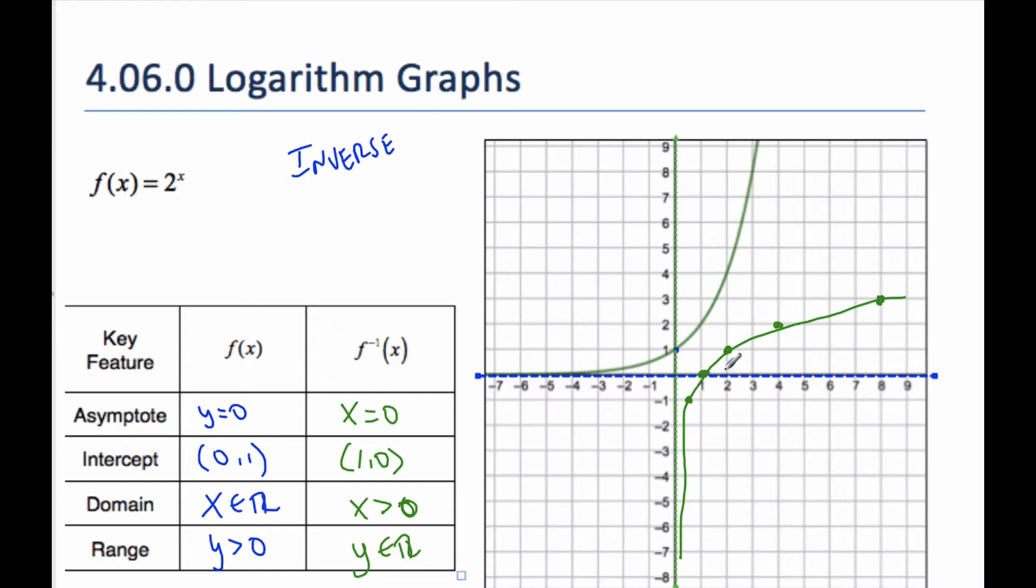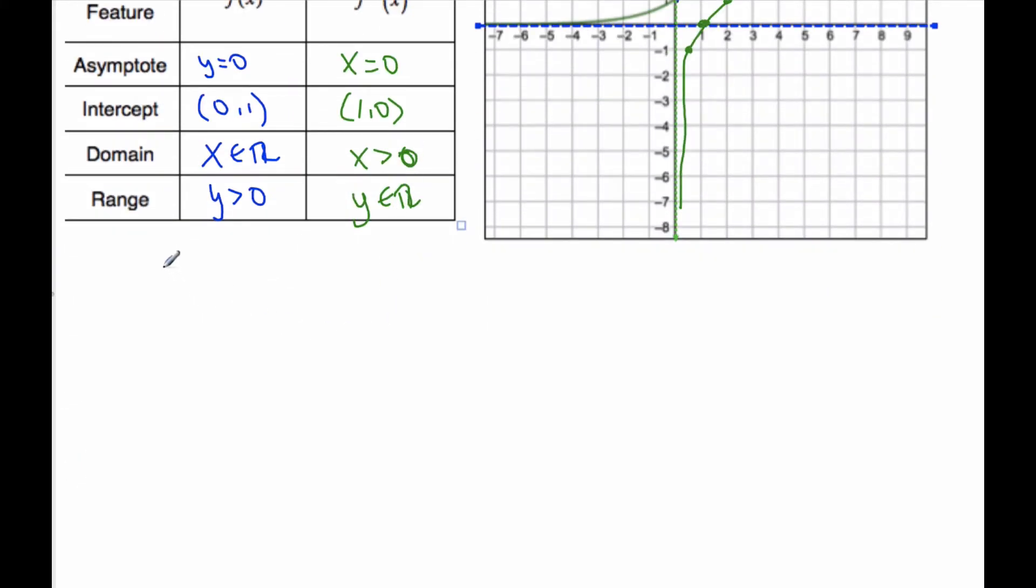So I see this graph that makes this nice curve, it's a reflection over y = x. And so if I'm going to find the inverse, I know the original function. My original function is y = 2^x. And if I'm going to make an inverse function, I have to switch my x and y's. And then I have to solve for y.